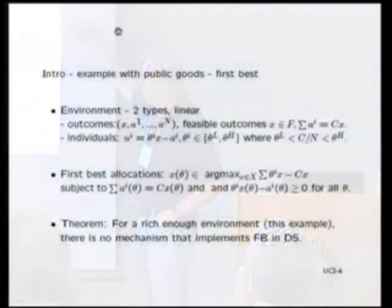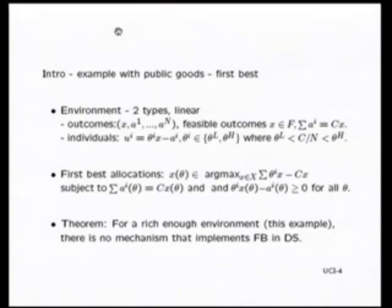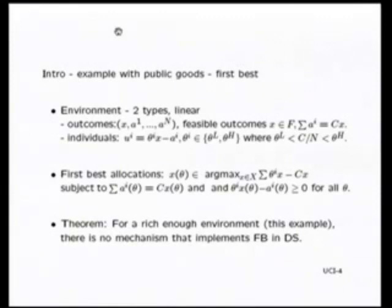To get some points across, I'm going to work in a very simple environment: public goods. There are only two types. There's a public good X, and private good allocations or taxes that have to add up to the cost of the public good. If we're going to produce the public good we collect taxes; if not, we don't. Individuals have linear utility functions: theta-i times the level of public good minus the tax. Low types are below the per capita cost and high types are above.